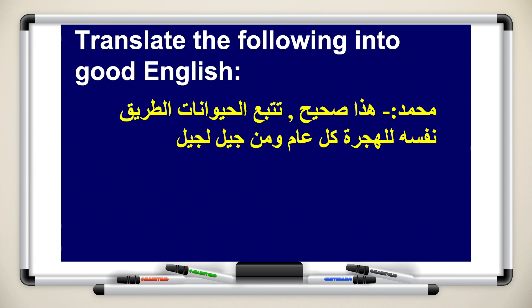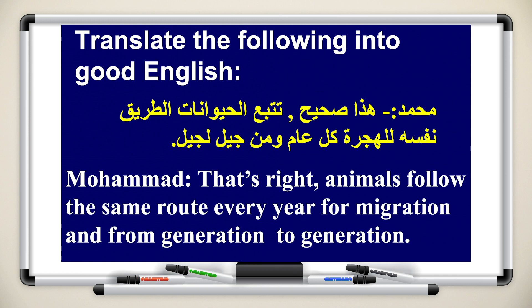Let's try another one. This time I'll give you more space to try. Try to translate the whole meaning of the sentence, not word-by-word translation — give it a shot. Read the sentence more than once so that you can understand it very clearly. Animals follow the same route every year for migration, from generation to generation. If you see here in Arabic, we started with the verb, but in English we started with the noun. If you want to replace any of the words with a synonym, that's fine too. You don't have to write the exact same answer as we have here.